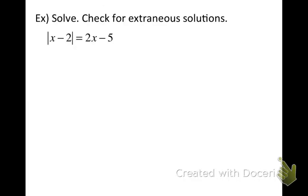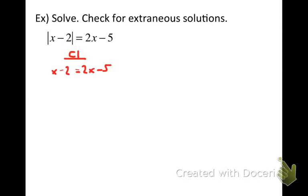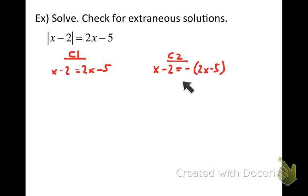Here's what we've been describing: an absolute value equation with variables on both sides. We're going to consider two different cases to find our solutions. First, we consider the case where this is a positive quantity — equal to exactly what's on the other side — so we write x minus 2 equals 2x minus 5. Then we consider the other case where x minus 2 is negative, making it the opposite of the right side, so we write x minus 2 equals the opposite of 2x minus 5.